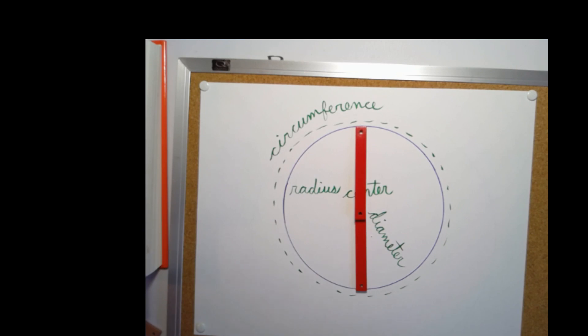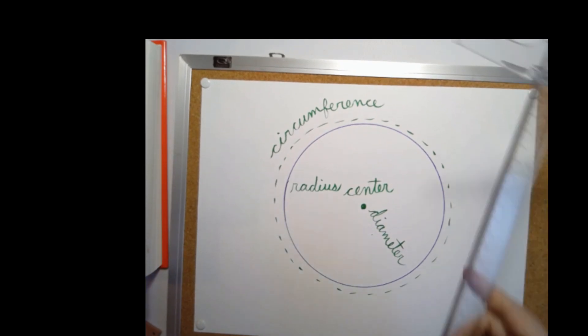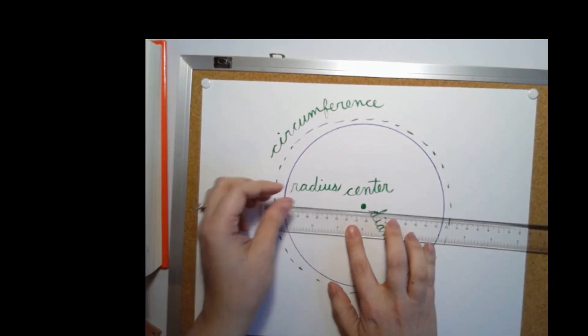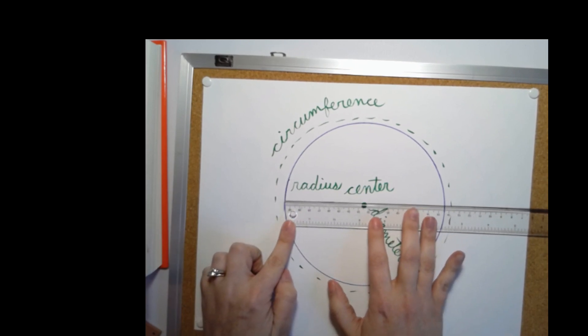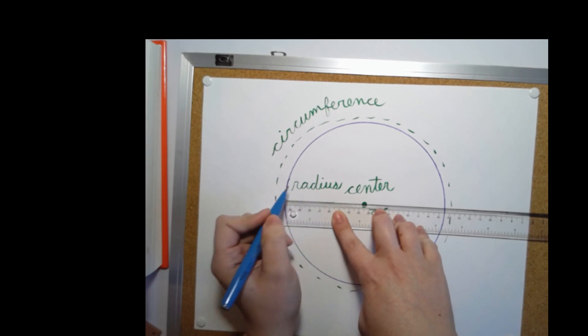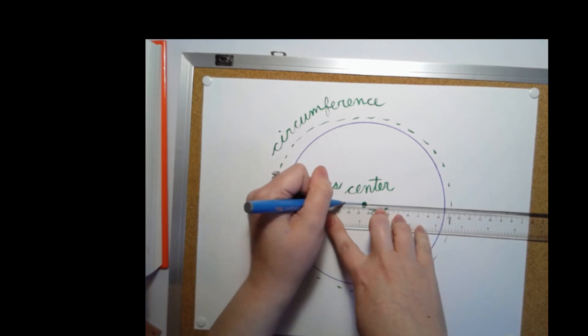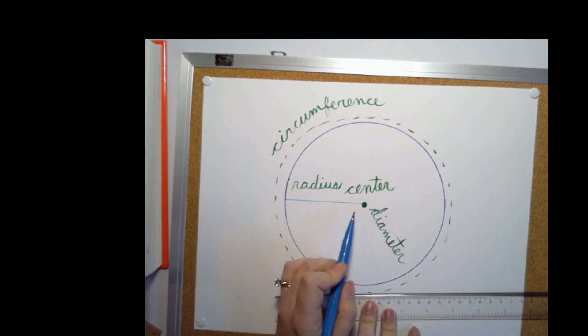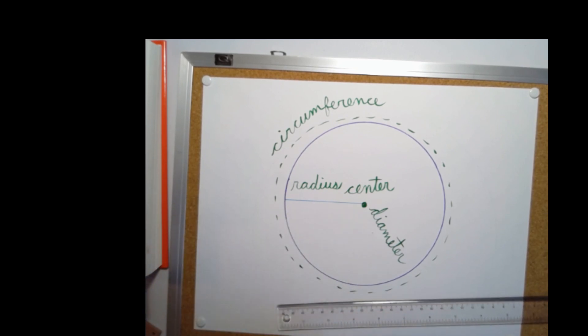And I can even use a ruler to make those lines instead of my sticks. So I'm going to grab my ruler, put it back down, and I can use my ruler just as a straight edge to go from the center to the perimeter. The radius, which will be a radius. So there I have my radius. I'll put an arrow pointing to it.